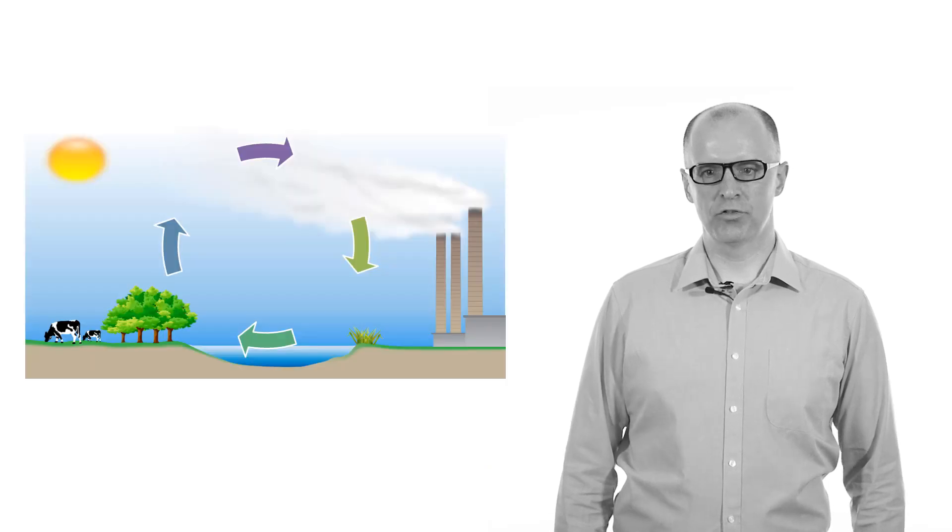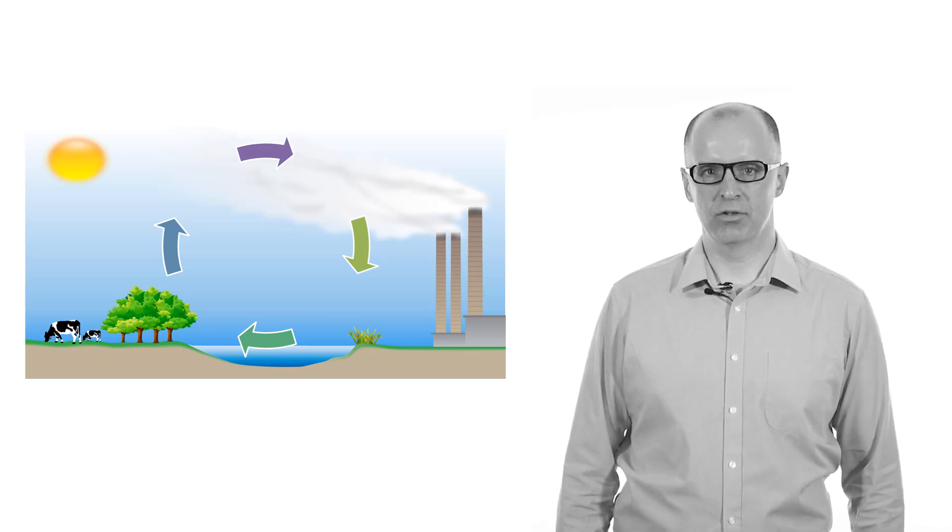The Earth is essentially a closed-loop system with materials that are needed for life to exist contained within it. Therefore, elements are constantly being cycled.